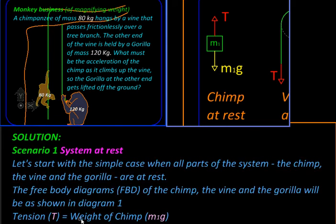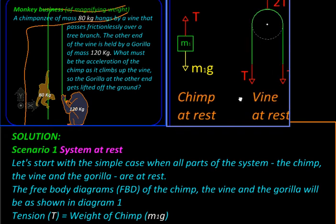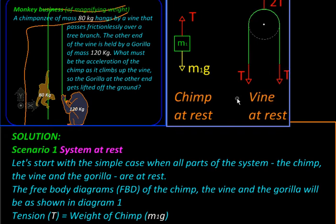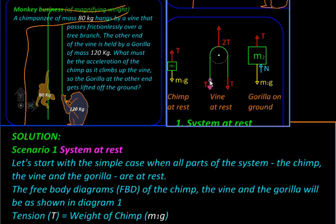The reaction of this tension on the chimp will create tension in the vine. So the free body diagram of the vine will look like this: it will have two tensions at the two ends and the branch will be supporting it with a force of two times the tension.